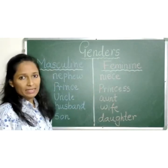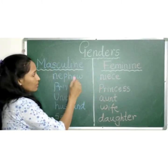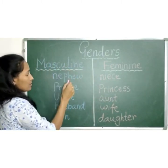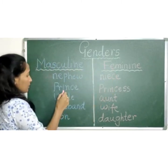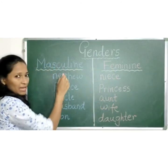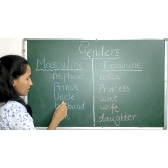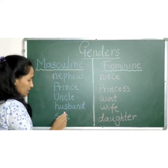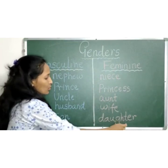Some more examples. Masculine: nephew, and feminine: niece. Prince — princess. Uncle — aunt. Husband — wife. Son — daughter.